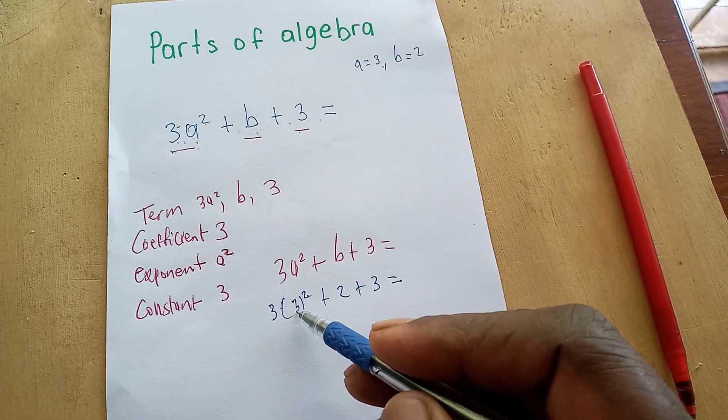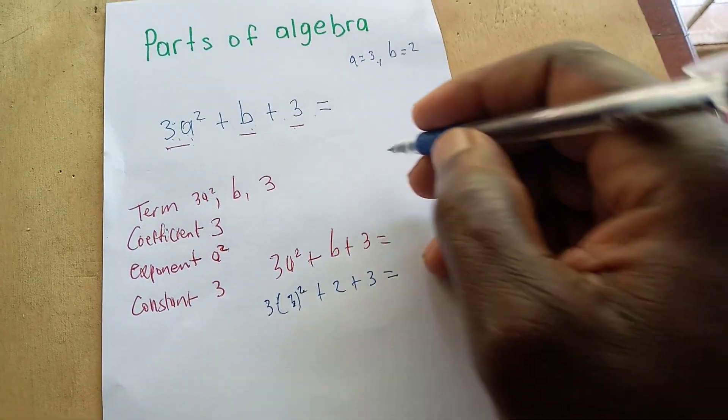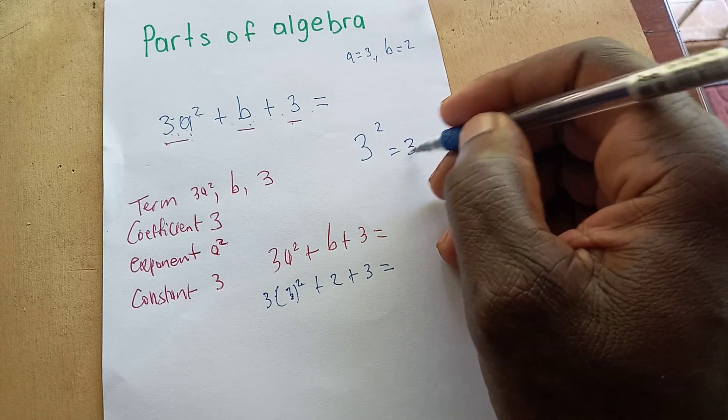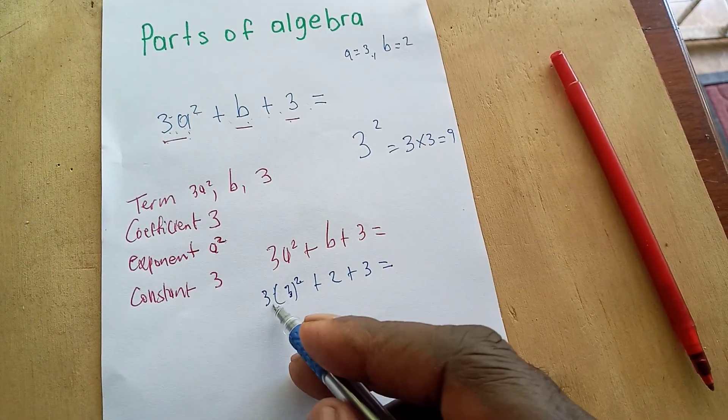Remember I said earlier that the power or exponent indicates how many times you should multiply the base number by itself. In this particular case, we have 3², which is saying we should multiply 3 times 3, which will give us 9, and 3 times 9 is going to give us 27.